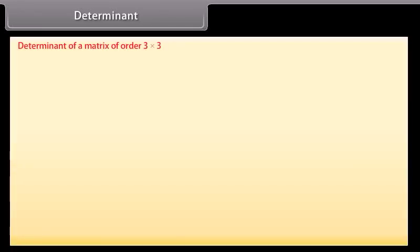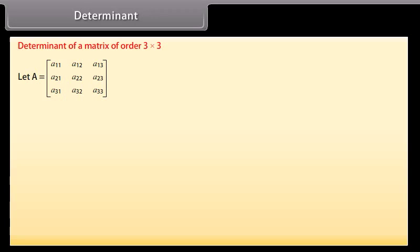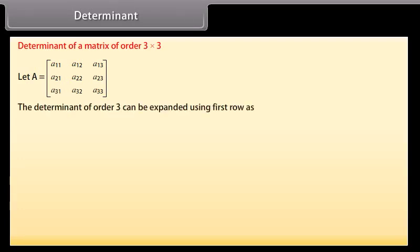Determinant of a matrix of order 3×3: let A be a matrix with first row A11, A12, A13; second row A21, A22, A23; third row A31, A32, A33. The determinant of order 3 can be expanded using the first row as A11·(cofactor) plus A12·(cofactor) plus A13·(cofactor).